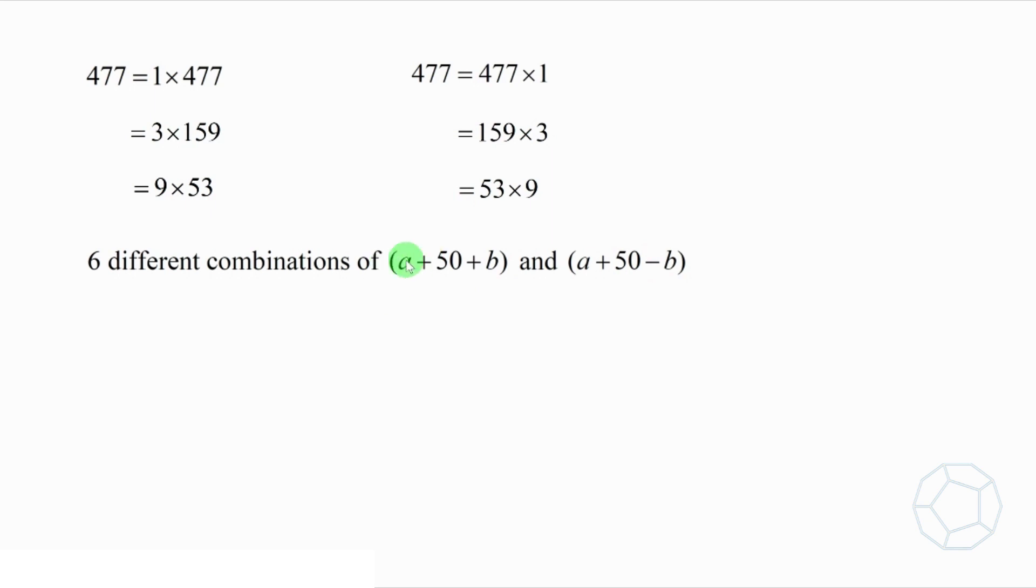However, if we have to solve for a only, then it is not necessary to reverse the order. Why? Let's look at the following two combinations. The only difference is the order of the factors 1 and 477. If we add up the two equations in each system, then we get the same result: 2a + 100 equals 478.